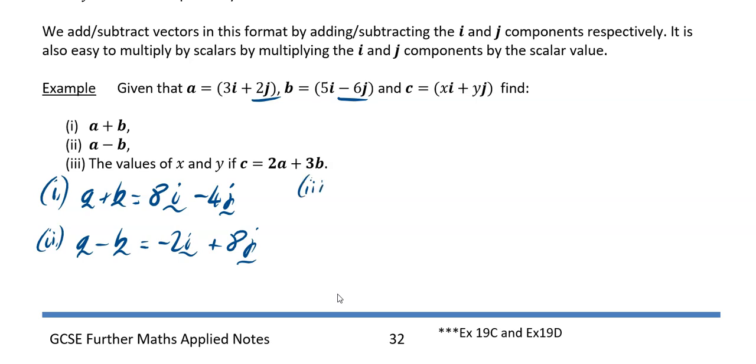Part three says find c if c equals 2a plus 3b. My a was 3i plus 2j, my b is 5i minus 6j.